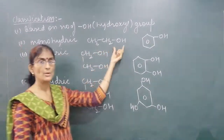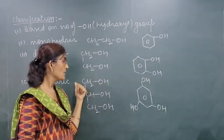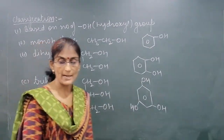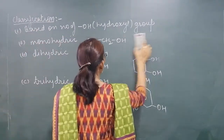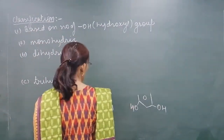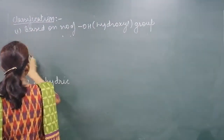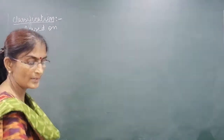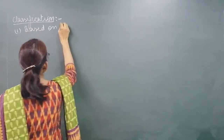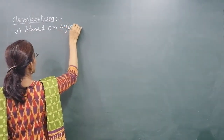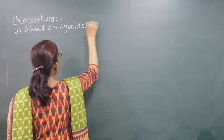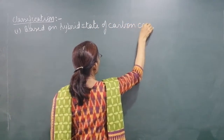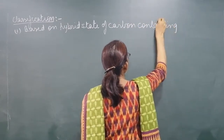So, depending upon the number of OH groups present, they are classified as Monohydric, Dihydric and Trihydric. Monohydric consists of one OH group, Dihydric has two OH groups, and Trihydric consists of three OH groups. The second type of classification is based on the hybrid state of the carbon containing the OH group.